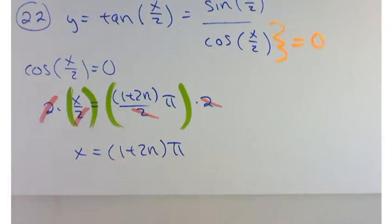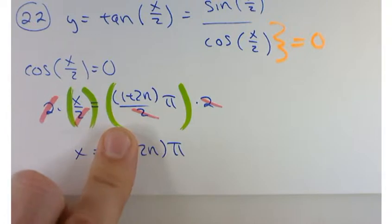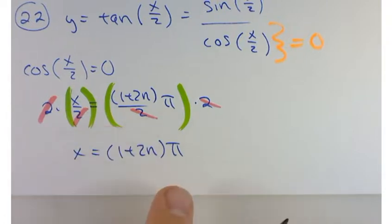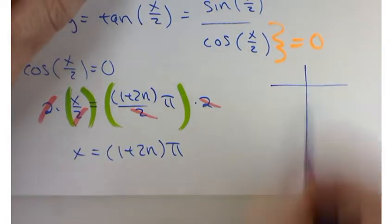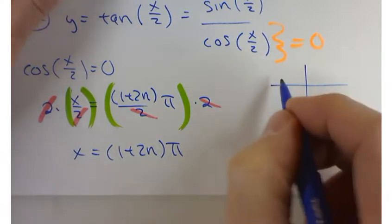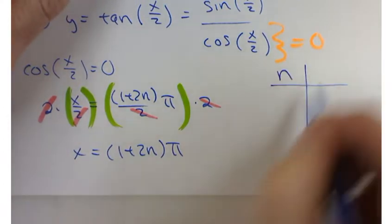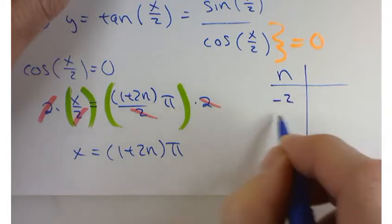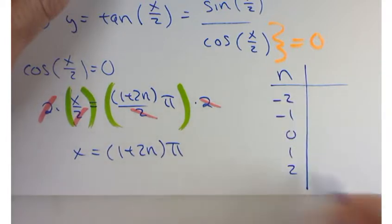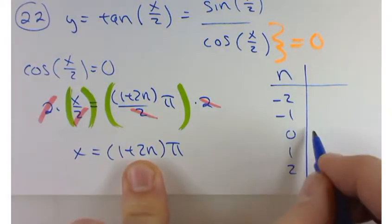Now 1 plus 2n is always just going to be an odd number. 2n would be an even number. 1 plus 2n is going to make it an odd number. So if you do our little charts here, I've been consistent about doing this. So negative 2, negative 1, 0, 1, and 2. At 0, I get π.